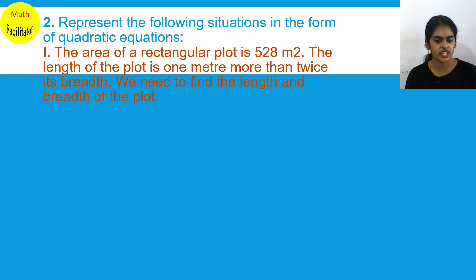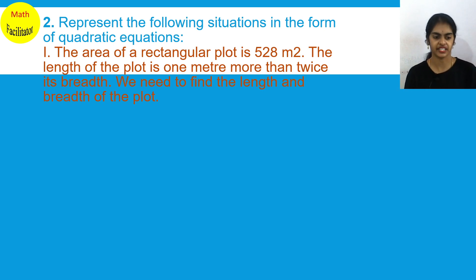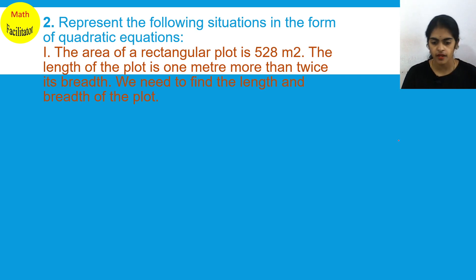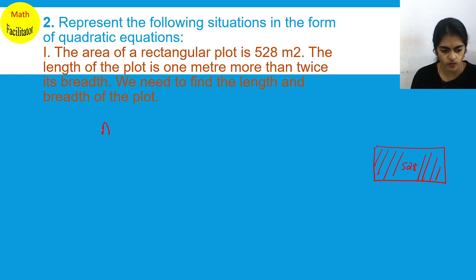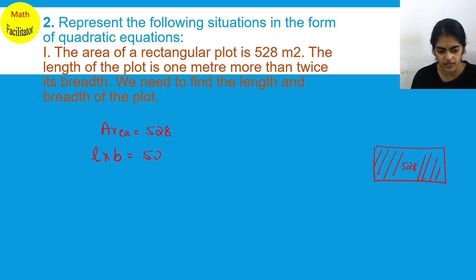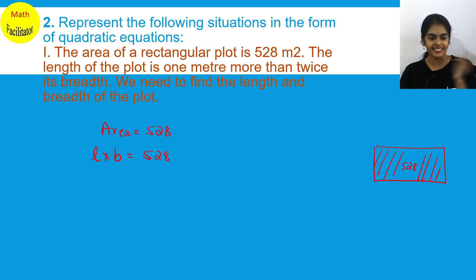Represent the following situations in the form of quadratic equations. So we are going to represent these situations in the form of a quadratic equation. The area of a rectangular plot is 528 square meters. A rectangular plot is given to you, and the area of this plot is 528 square meters. Area of rectangle is length into breadth, so length into breadth equals 528 square meters.